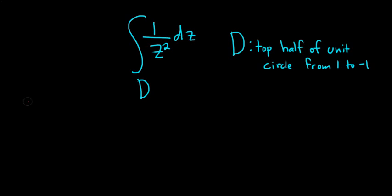So the formula to integrate a contour integral, say f of z dz over a contour D, is equal to the definite integral from a to b of f of w of t times w prime of t dt.